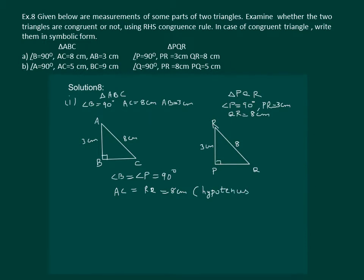So the hypotenuses are equal and side AB is equal to side RP which is equal to 3 cm. So triangle ABC is congruent to triangle RPQ by RHS congruency rule.